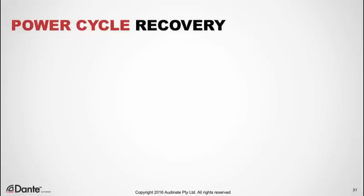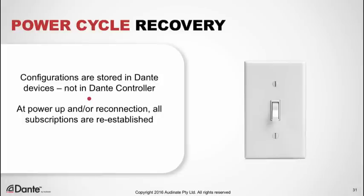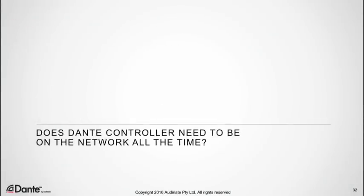What happens when we disconnect or power down devices, or if the power goes out? This happens all the time, whether in an uncontrolled circumstance or because we're tearing down and setting up a system. Fortunately, in Dante, configurations are stored in the devices, not in Dante Controller. When we unplug or power down devices they disappear from Dante Controller, but when we power them back up or connect them again, they reappear and all the subscriptions are immediately re-established — we don't even need Dante Controller on the network for this. In fact, Dante Controller does not need to be on the network all the time. The devices contain all this information themselves; you only need Dante Controller when you wish to make a change.